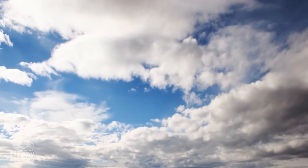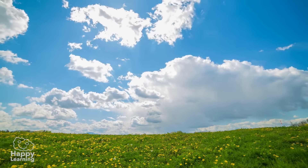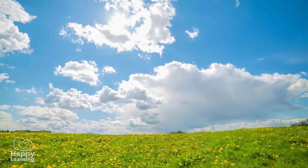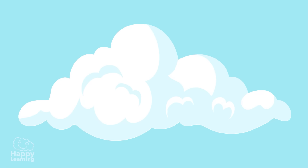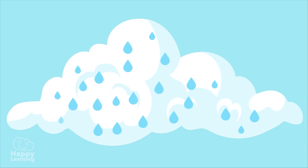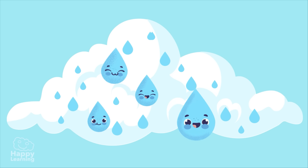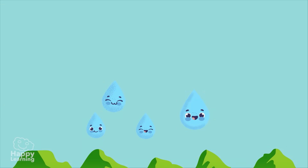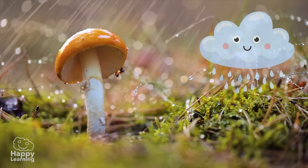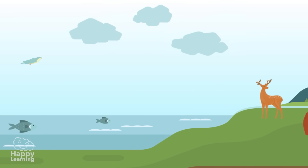Once the water has condensed and turned into a cloud, it continues its amazing journey by being blown by the wind, traveling from one place to another. Clouds are actually tiny little drops of water suspended in the air. But when the clouds grow, they collect more and more water. These water drops crash into each other and become bigger drops, then fall to the ground in the form of rain or even snow. This stage of the water cycle is called precipitation.